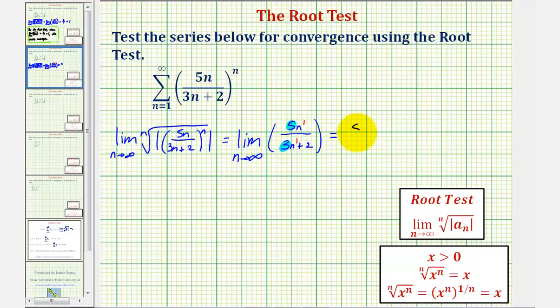And since five thirds is greater than one, by the root test the series diverges.